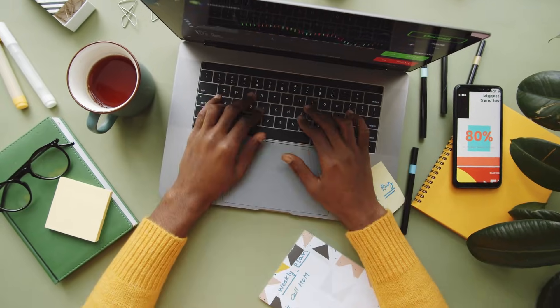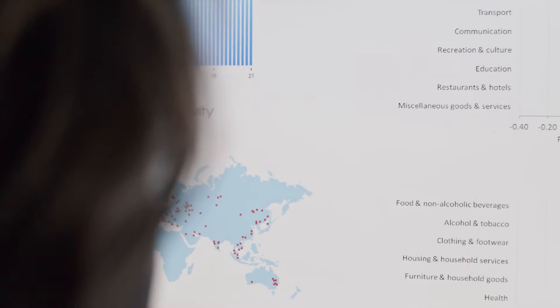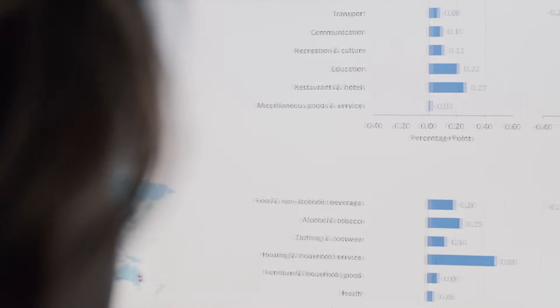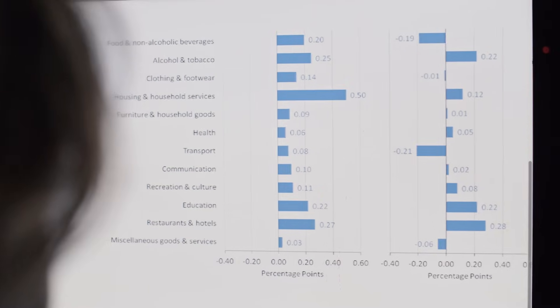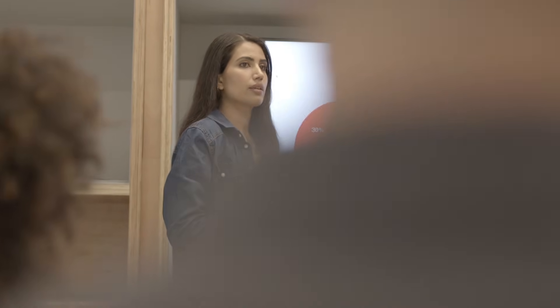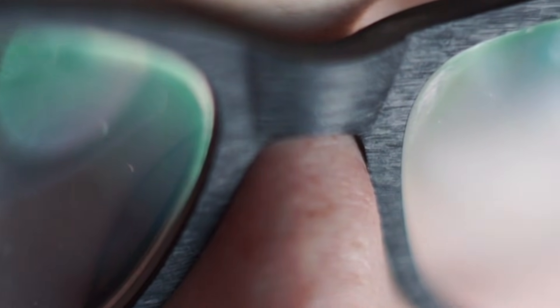The integration with Google Search is another differentiator that few competitors can match. This isn't just a nice-to-have feature — it fundamentally changes what you can create. When you're building infographics, educational content, or technical illustrations, being able to fact-check and pull in real-world data automatically means your content is accurate from the start. You're not just making things that look good — you're making things that are actually correct and useful.